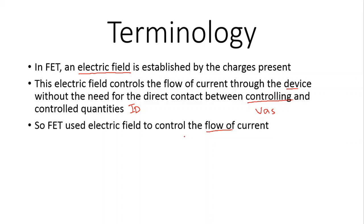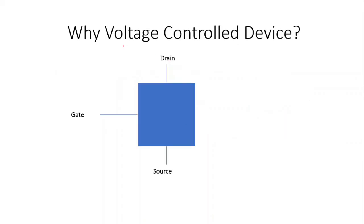Now why do we call it a voltage control device? Because if we have a voltage applied here — for example, VGS, the gate-to-source voltage — this applied voltage generates an electric field within the device. By controlling this electric field, or by controlling this voltage, we can control the drain current flow through the device.